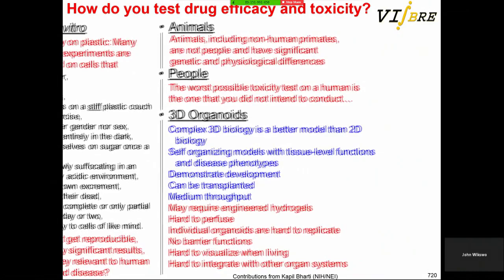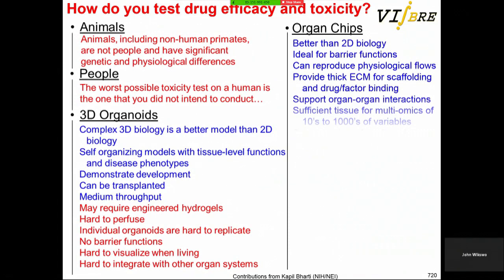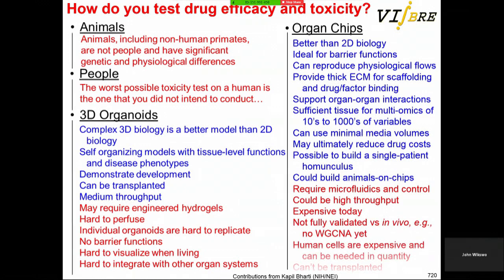Organ chips are generally better than 2D biology. They're ideal for barrier functions and can give thick extracellular matrix, and they can support organ-organ interaction. We're choosing to make organs large enough for multi-omics — mass spectrometry and metabolomic measurements. This addresses the volume problem. Disadvantages include being currently low throughput, not fully validated, and human cells are expensive, though that's getting easier. You also can't transplant an organ chip into a patient as you might an organoid.